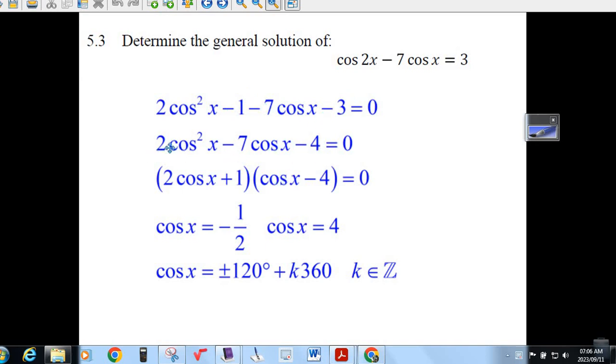Now, this is just a quadratic that you can factor. Two brackets, 2 cos x times cos x gives me the 2 cos squared, and minus 4 times 2 cos x gives me minus 8 cos x plus 1 cos x. There's the minus 7 cos x. And 1 times minus 4, there it is.